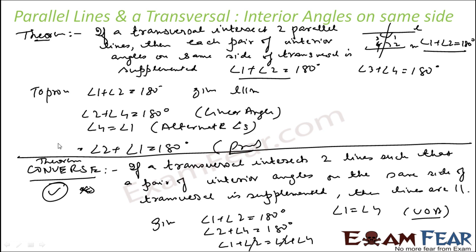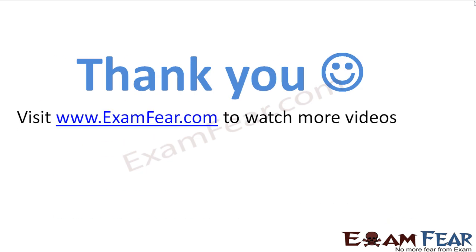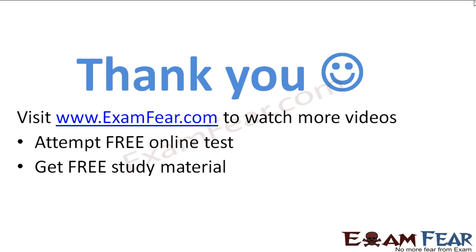So there are two theorems for interior angles on the same side. The first theorem: if a transversal intersects two parallel lines, then the pair of interior angles on the same side has a sum of 180 degrees. The second converse theorem: if a transversal intersects two lines such that the interior angles on the same side sum to 180 degrees, then the lines are parallel. Thank you — visit our website examfear.com to watch more quality education videos, attempt free online tests, access free study materials, and find free tutors and mentors.